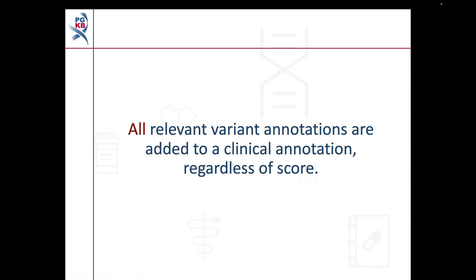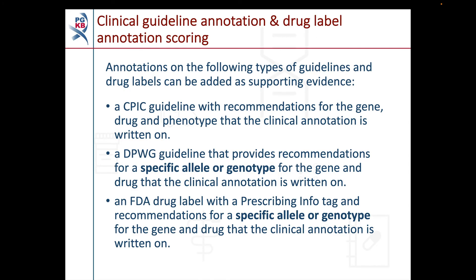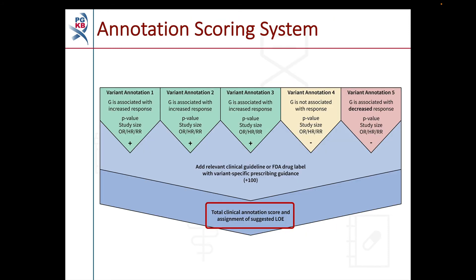No matter what they score, all relevant variant annotations are added to a clinical annotation. Once all the variant annotations are scored, we look for clinical guidelines or FDA drug labels which give variant-specific prescribing guidance for the variant-drug or gene-drug pair covered by the annotation. Currently, we add relevant guidelines from CPIC and the DPWG, or drug labels from the US FDA, to our clinical annotations. These are the three sources that we're able to regularly curate and update, but we can add other sources in the future. The scores of the variant annotations and any clinical guidelines or FDA drug labels are then combined to give a total score for the clinical annotation.